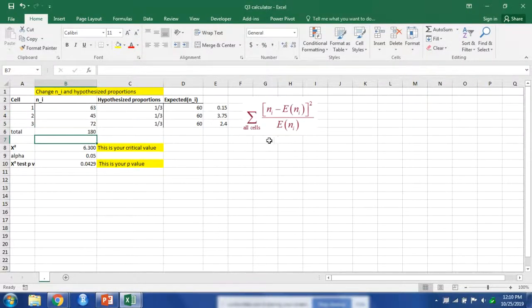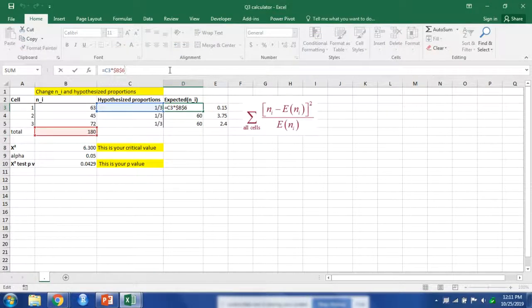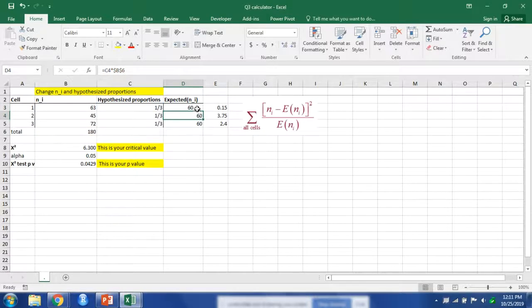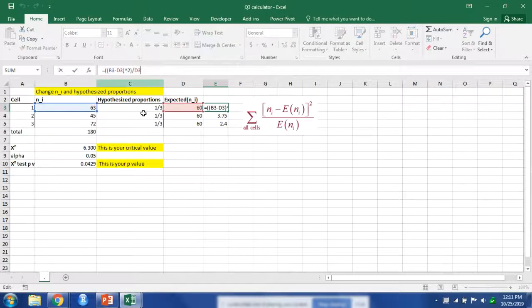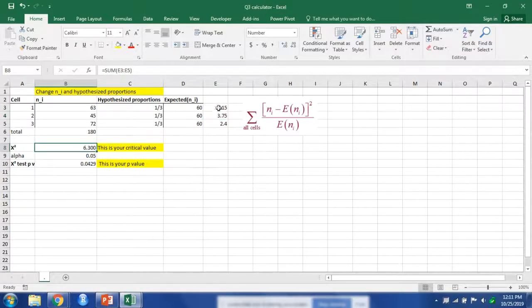The way it calculates it out is we sum together our observed minus our expected. We have a total of 180. This was the proportion of it, so one third of 180 is 60. So each value will be expected to be 60. Here we calculate out this formula. It is our n value minus our expected value squared and divided by our expected value. To get our chi-square value, we just sum those together.